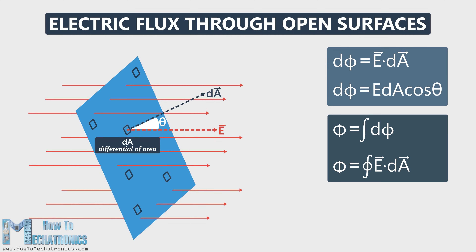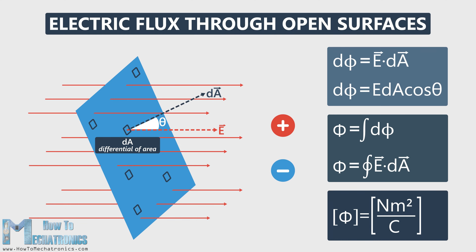It is a scalar quantity and the end result can be positive or negative. If the flux is going from the inside to the outside, we can call that a positive flux, and if it's going from the outside to the inside, that's a negative flux. The unit of electric flux is Nm squared per coulomb.